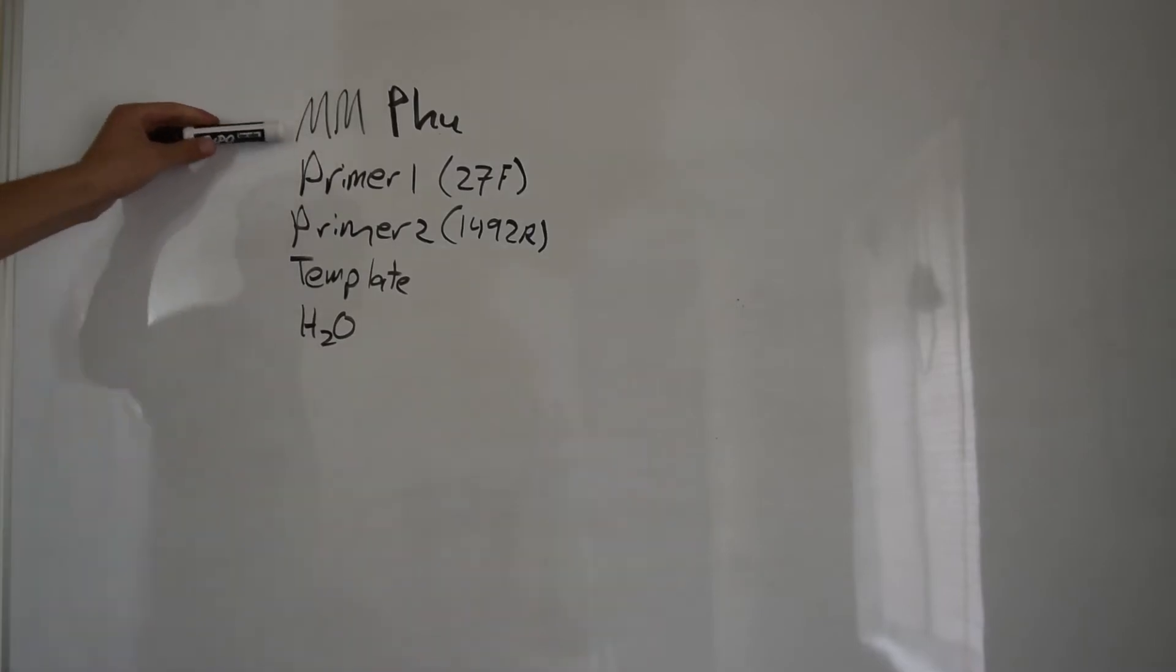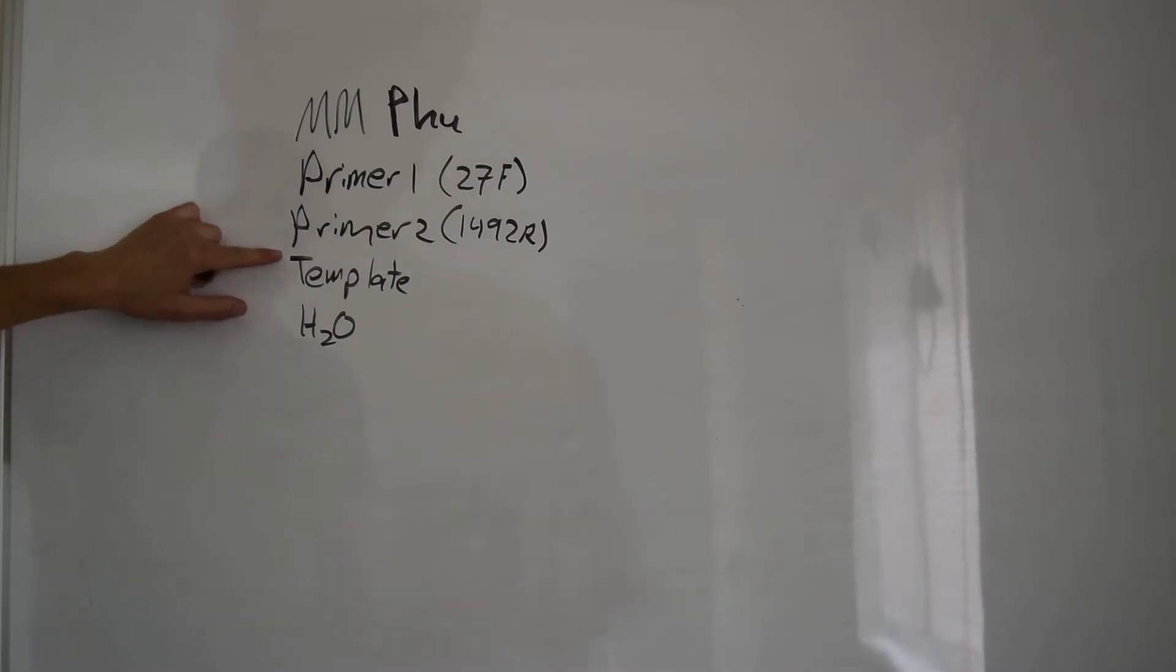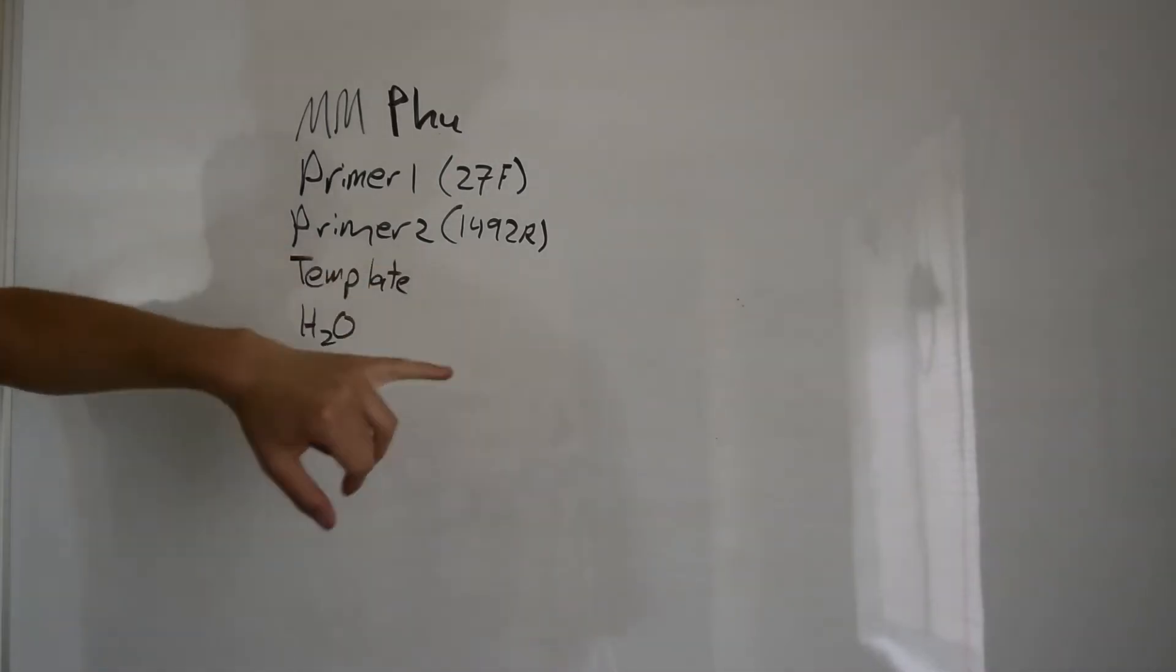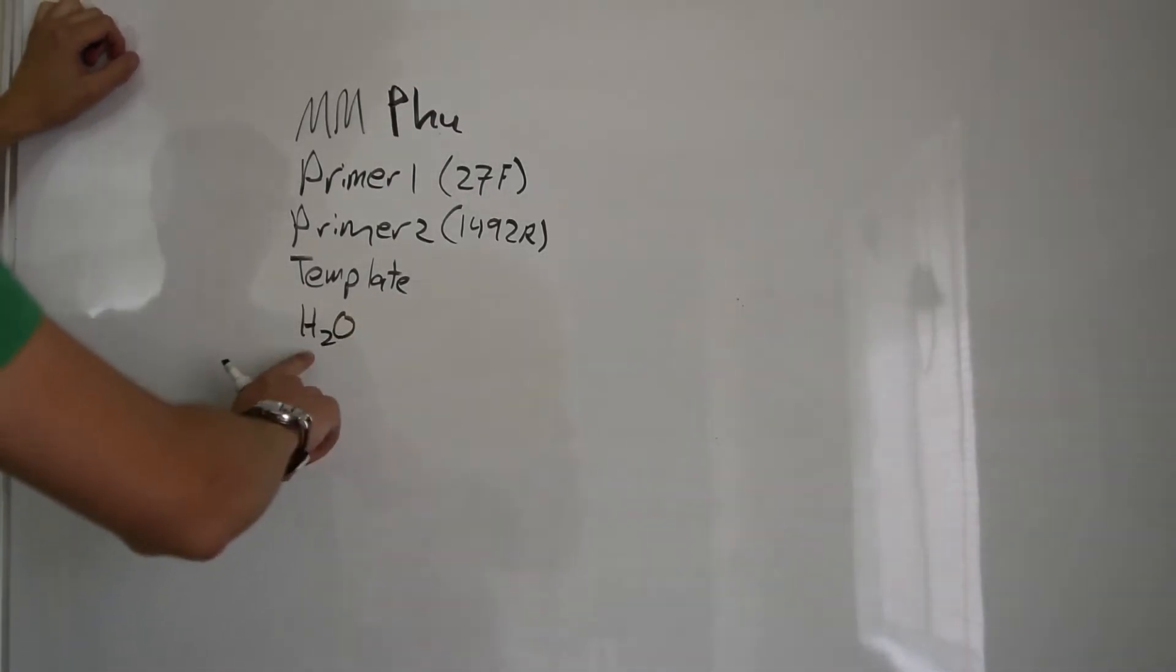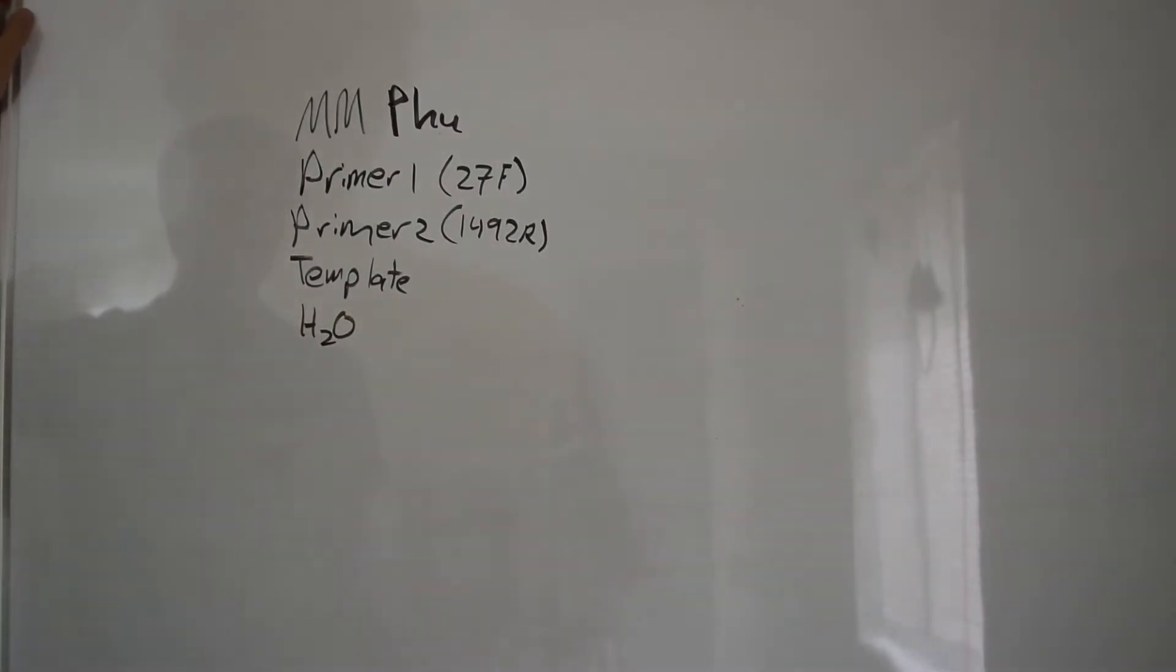So in order to do this reaction, we need a few components. The first is a master mix that contains our DNA polymerase enzyme, as well as buffers, salts, and others. We also have primers. In this case, we're using 27F and 1492R, which are universal bacterial primers. We'll include a template to the DNA that we're amplifying, and water to fill it up to the correct reaction volume.